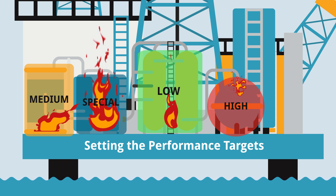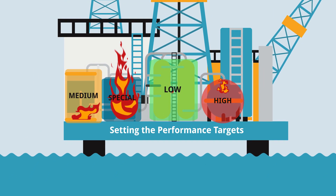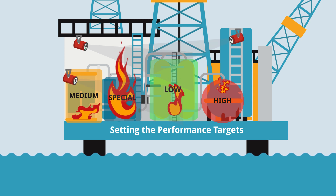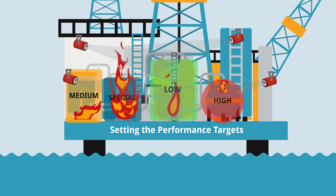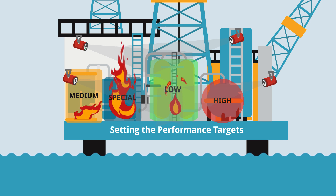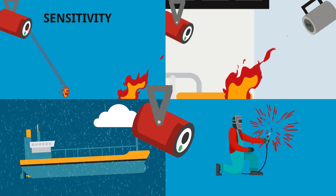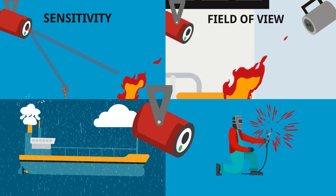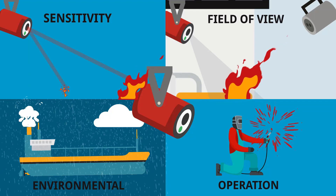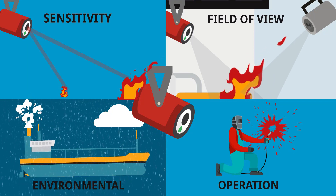Step 3: The designer then applies flame detectors in optimal positions considering the principle of operation, accessibility, and based on the unique characteristics of the flame detector being assessed. Parameters such as sensitivity, field of view, and robustness to environmental and operational conditions are key to developing a good design.